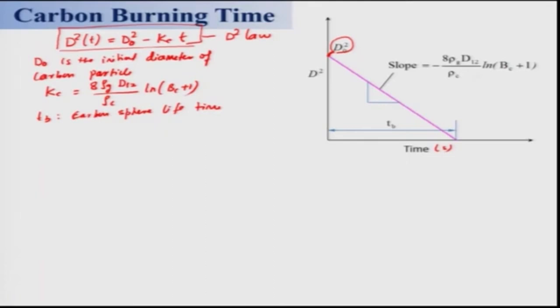Bc is equal to f times y_O∞, where y_O∞ is the mass fraction of the oxidizer. This mass fraction can be 1 if the atmosphere is pure oxygen, 0.232 if it is air, or some other value if it is varying. Here, f is your fuel-to-oxidizer stoichiometric ratio.